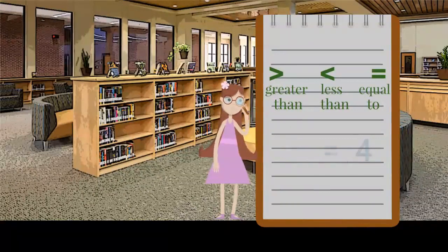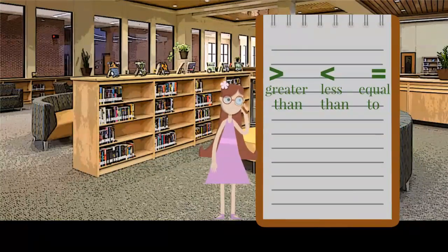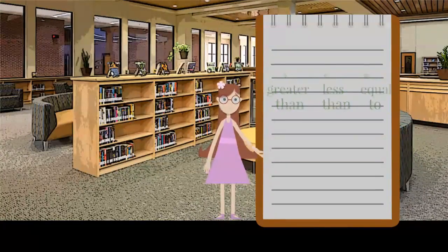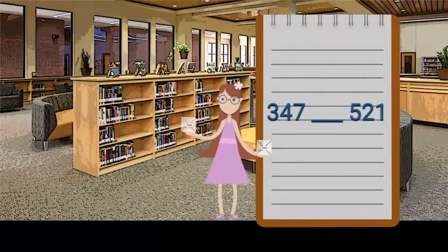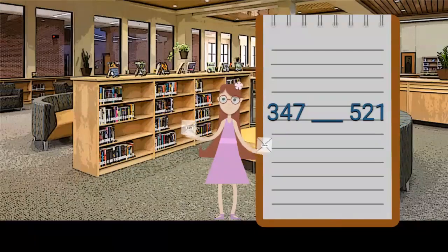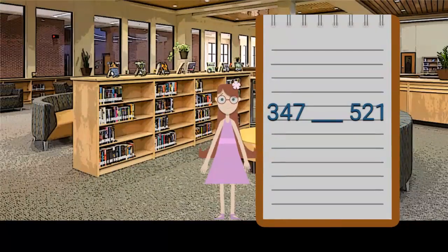Now that we know how the symbols work, let's look at comparing three-digit numbers. This book has 347 pages. This book has 521 pages. How do they compare?